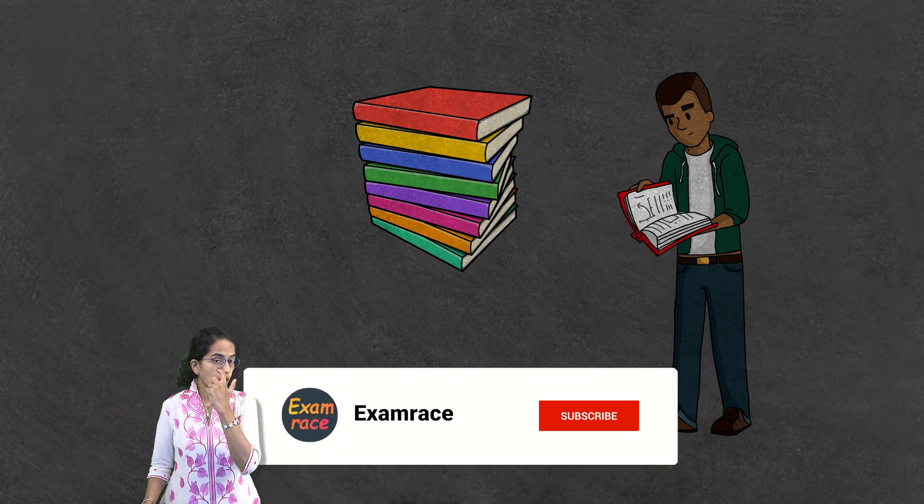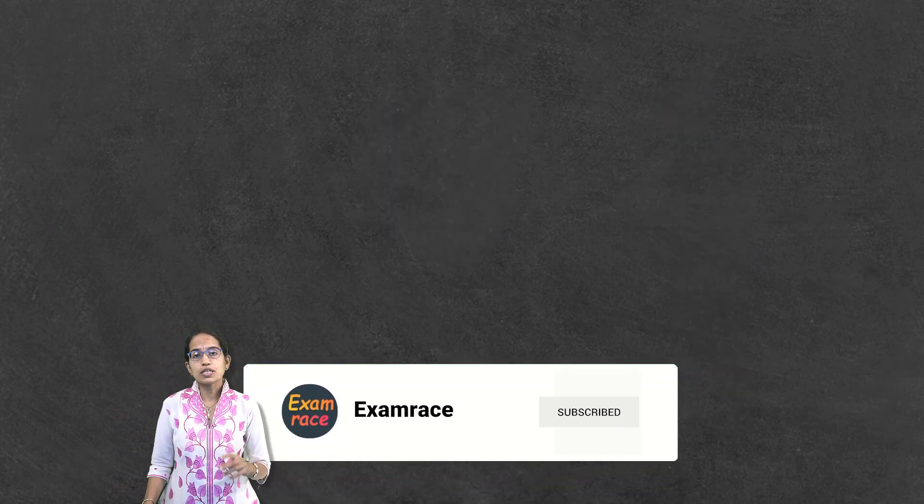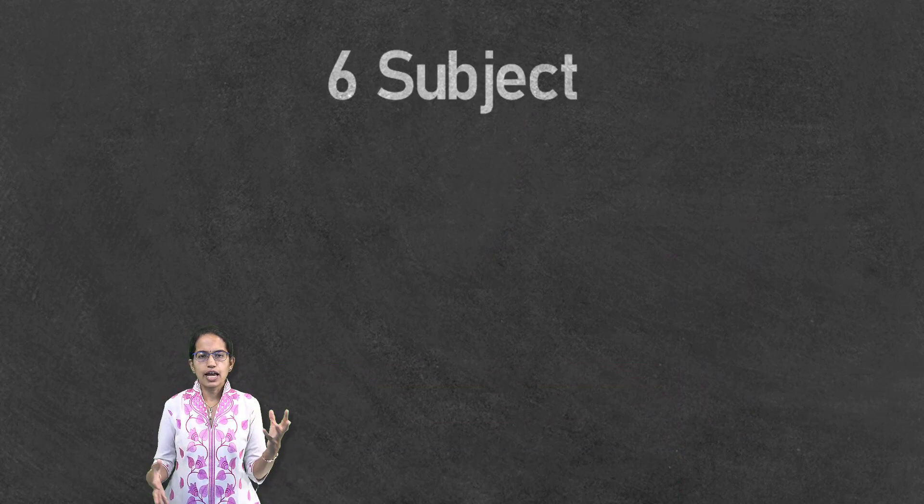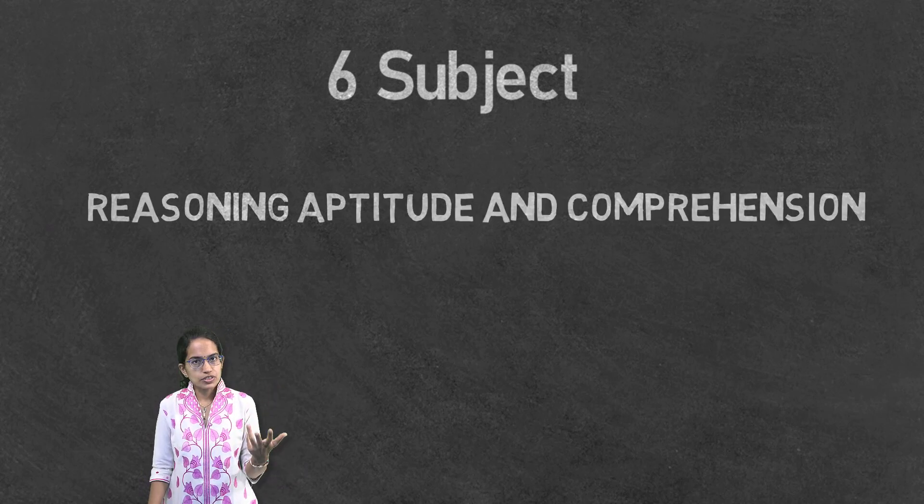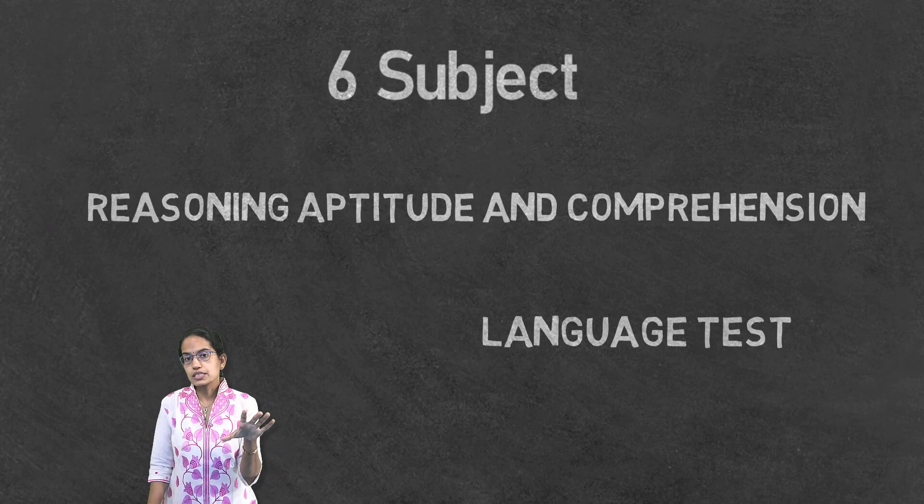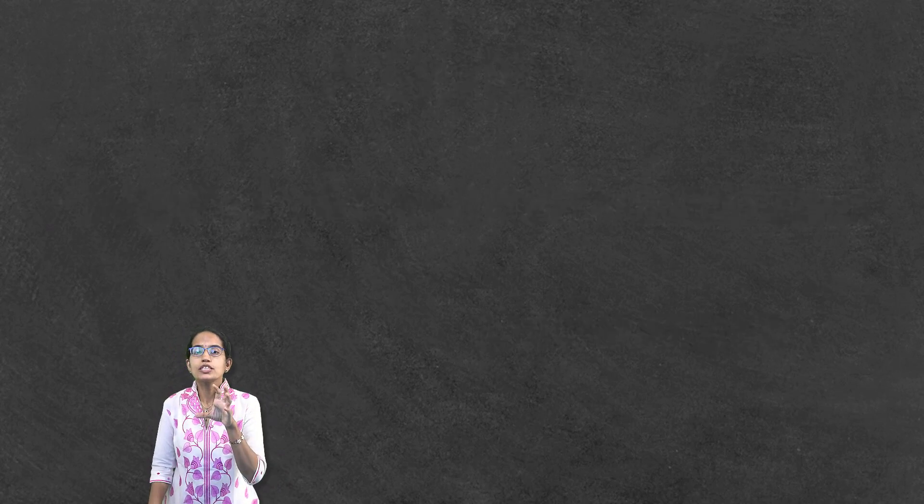Now this examination would comprise of 6 domain subjects along with a test on general awareness which would include reasoning, aptitude and comprehension, and another one which is your language test. So those are the subjects that you would have to cover for your CUET, the common university entrance test.